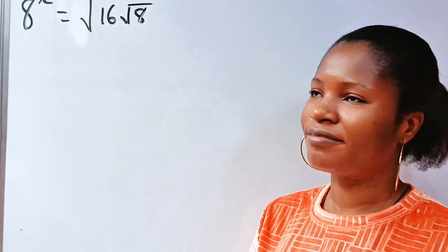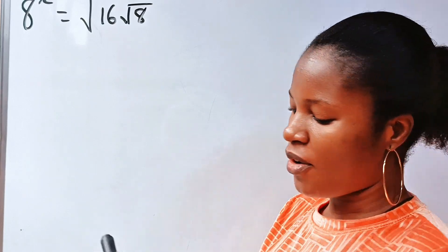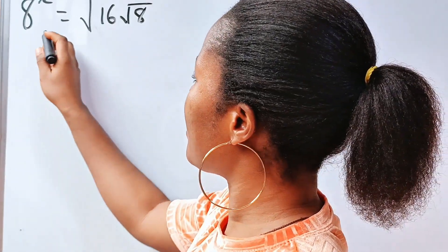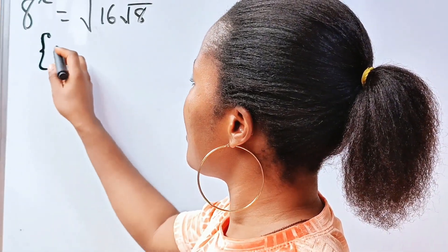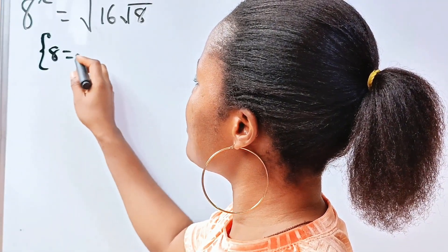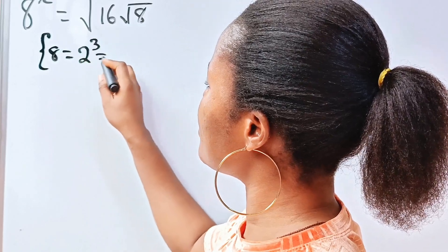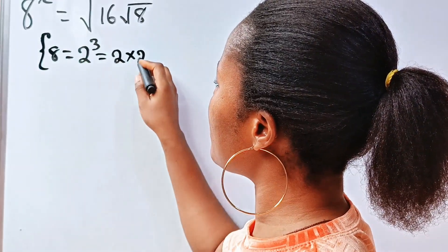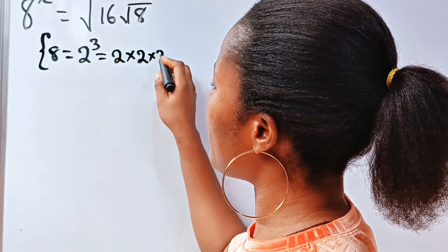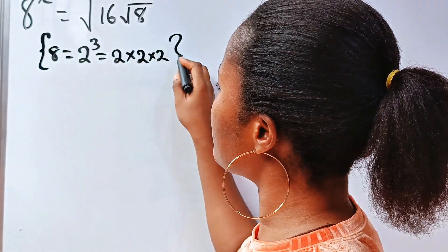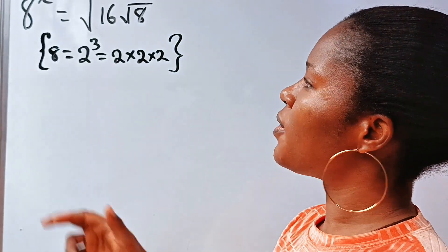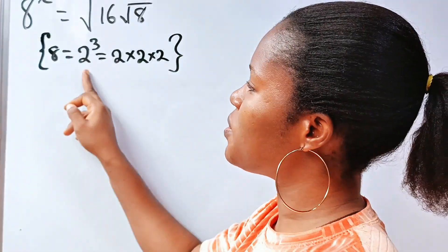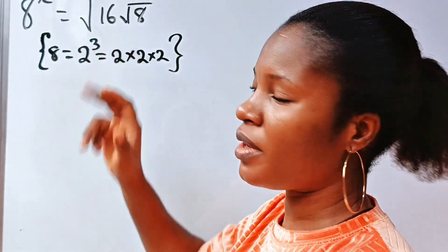So the first method: we are going to note that 8 is 2 to the power of 3 — that is 2 multiplied by 2 multiplied by 2. So we are going to replace 8 with 2 to the power of 3.